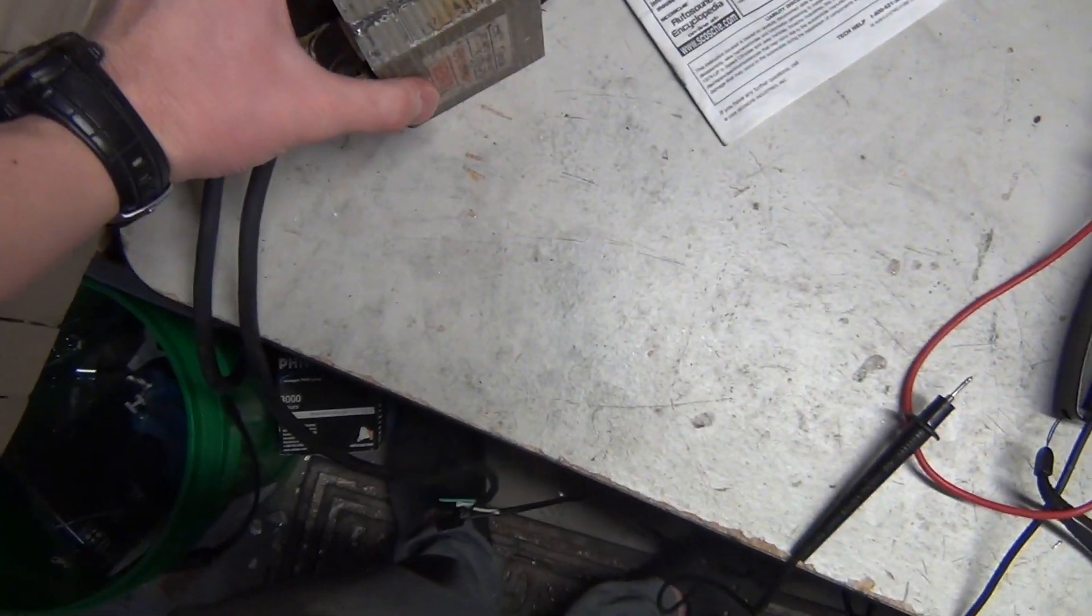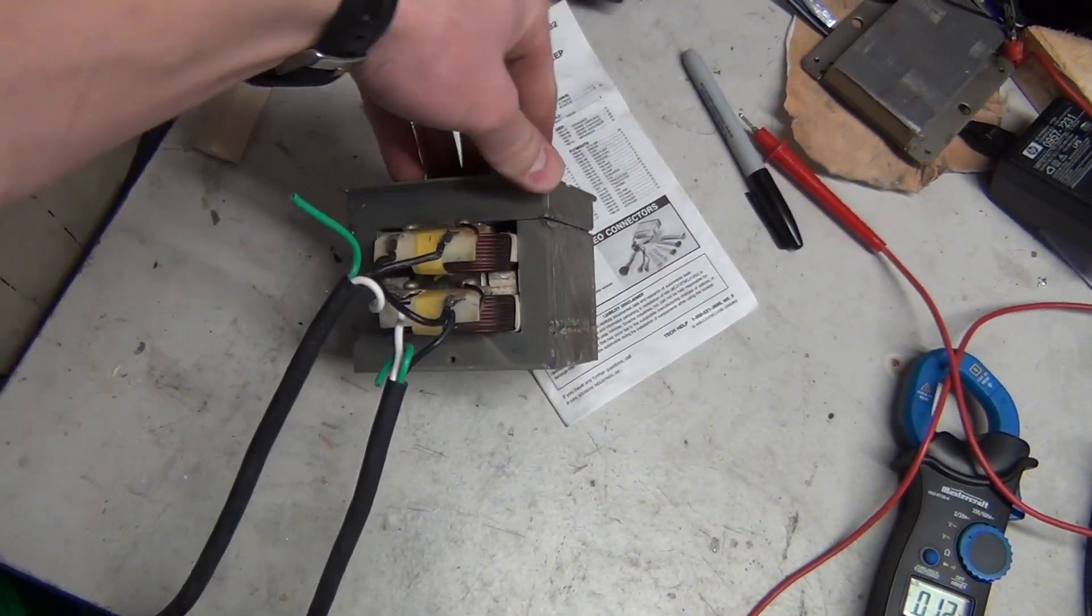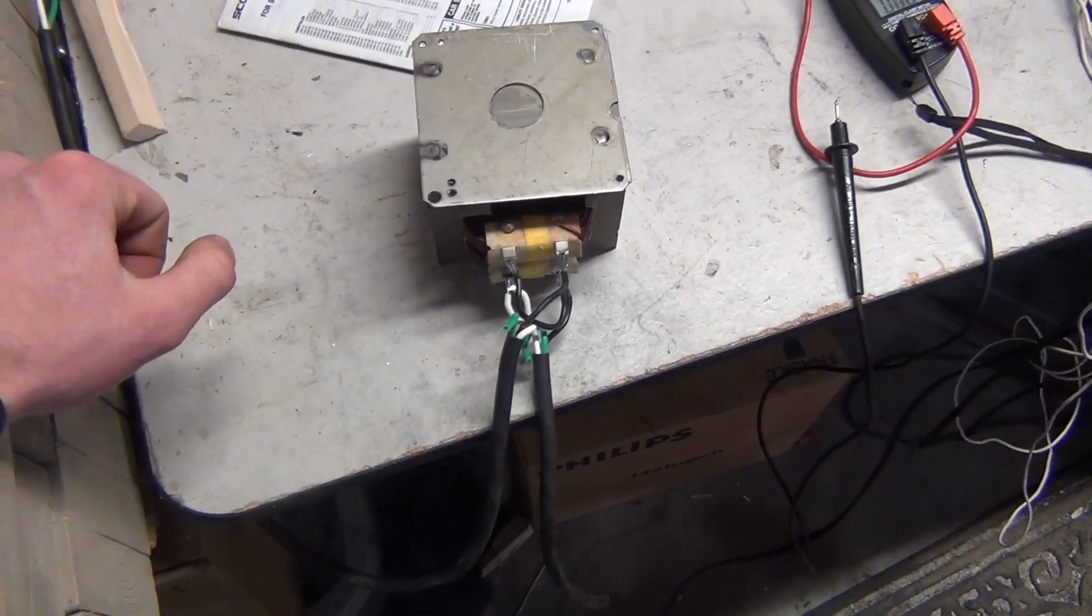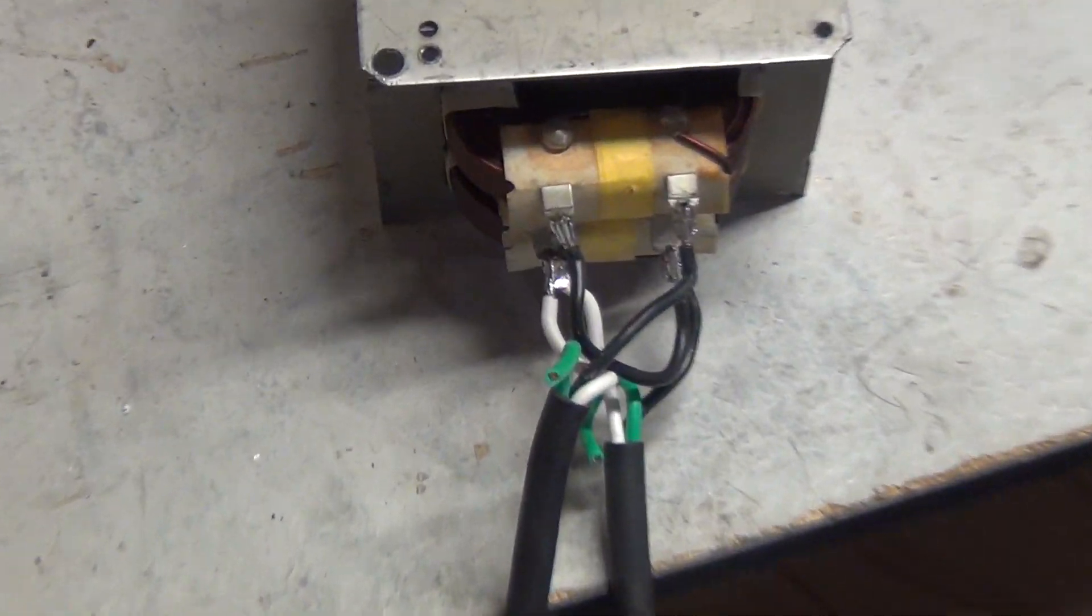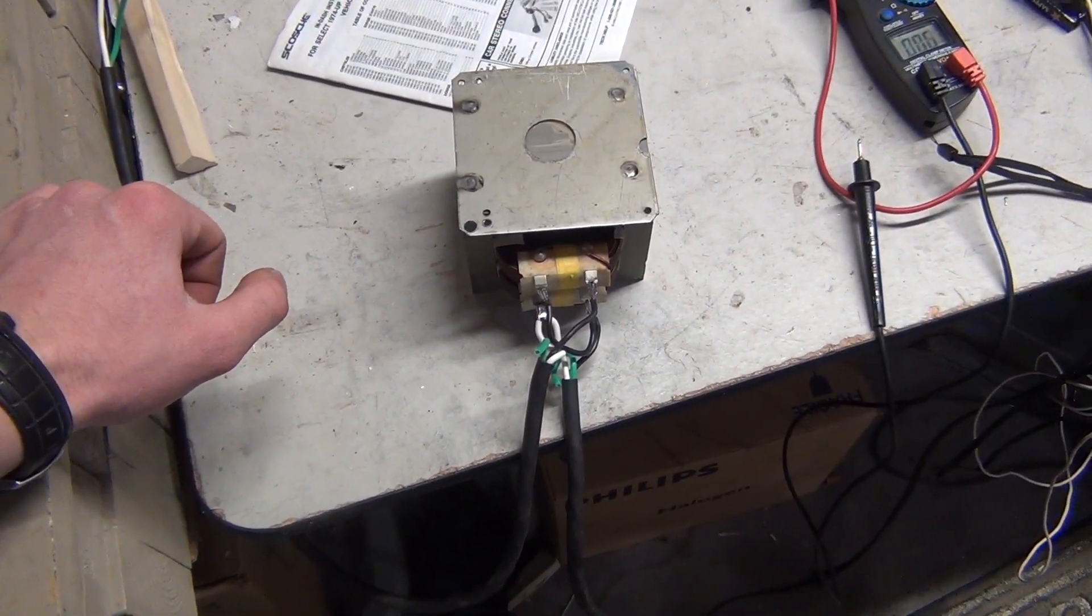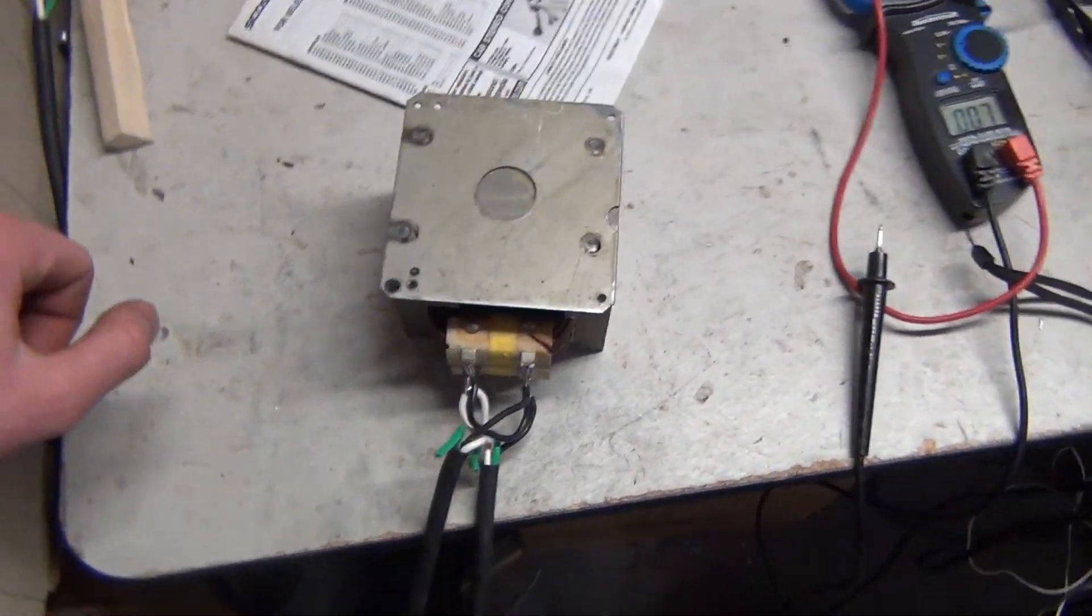Two old microwave oven transformers, two primaries from them, one core, some plywood spacers cut out, and you got yourself basically a 120 to 240 boosting auto transformer. So yeah, hope you guys enjoyed that video and I will see you in the next one.